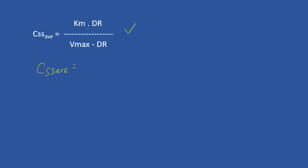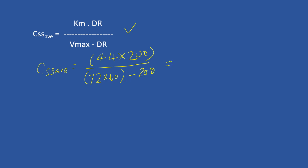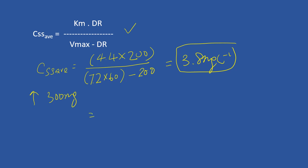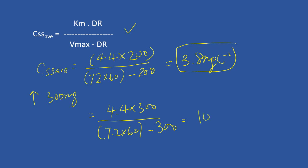CSS average equals 4.4 multiplied by 200, divided by Vmax (remembering to multiply by the body weight of the patient) minus 200. Solving this, your answer will be 3.8 mg per liter. When you increase the dose to 300 mg, that will be 4.4 multiplied by 300, divided by (72 multiplied by 60) minus 300. Solving this, your answer will be 10 mg per liter.